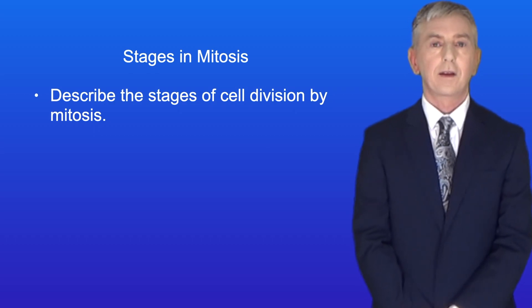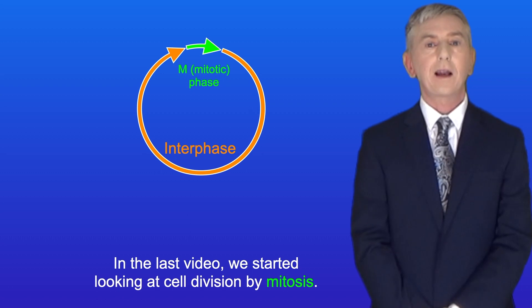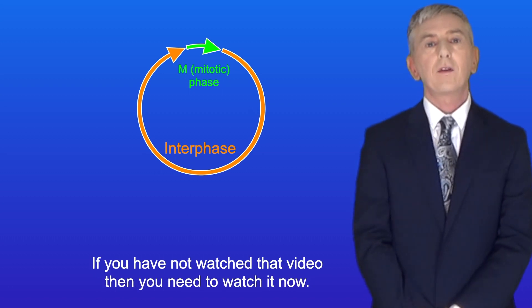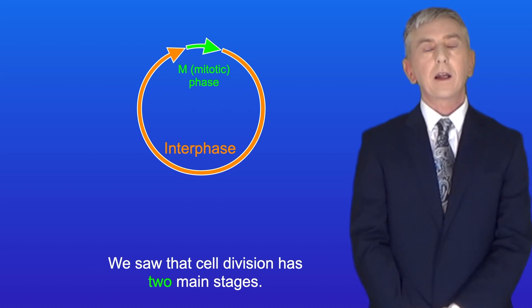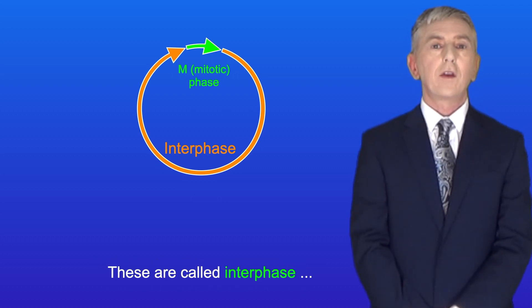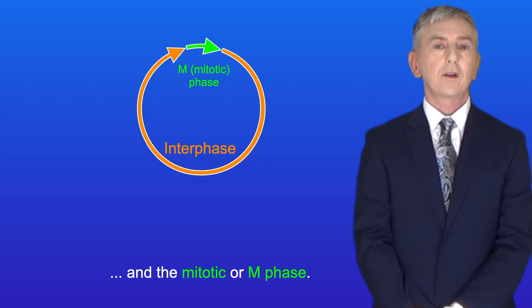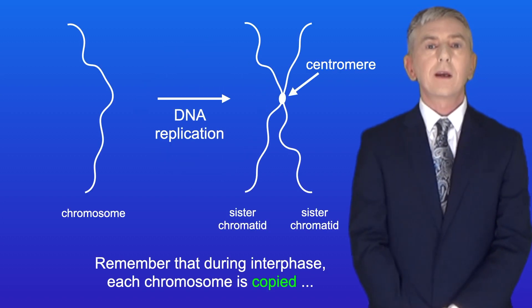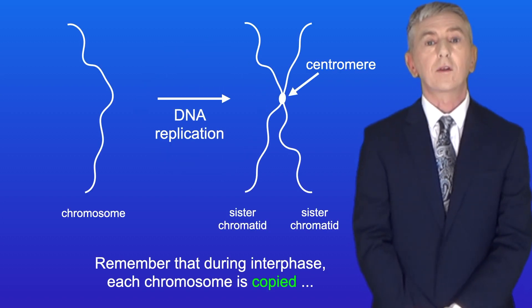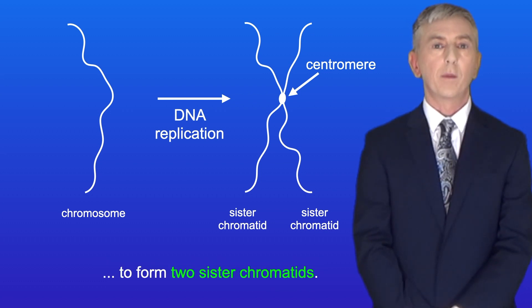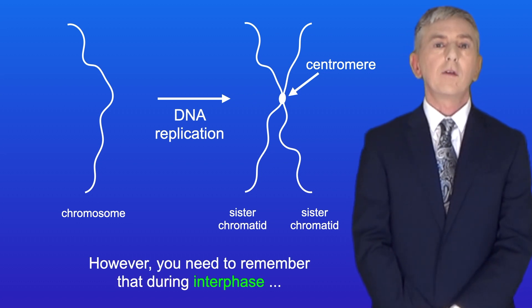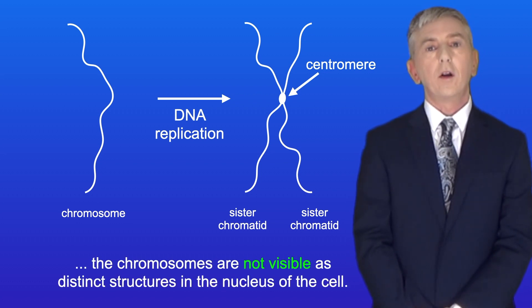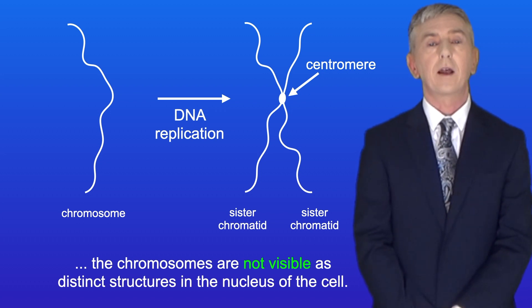Hi and welcome back to Free Science Lessons. In the last video we started looking at cell division by mitosis, and if you haven't watched that video then you need to watch it now. We saw that cell division has two main stages, called interphase and the mitotic phase. Remember that during interphase each chromosome is copied to form two sister chromatids, and the sister chromatids remain joined at the centromere. However, during interphase the chromosomes are not visible as distinct structures in the nucleus of the cell.